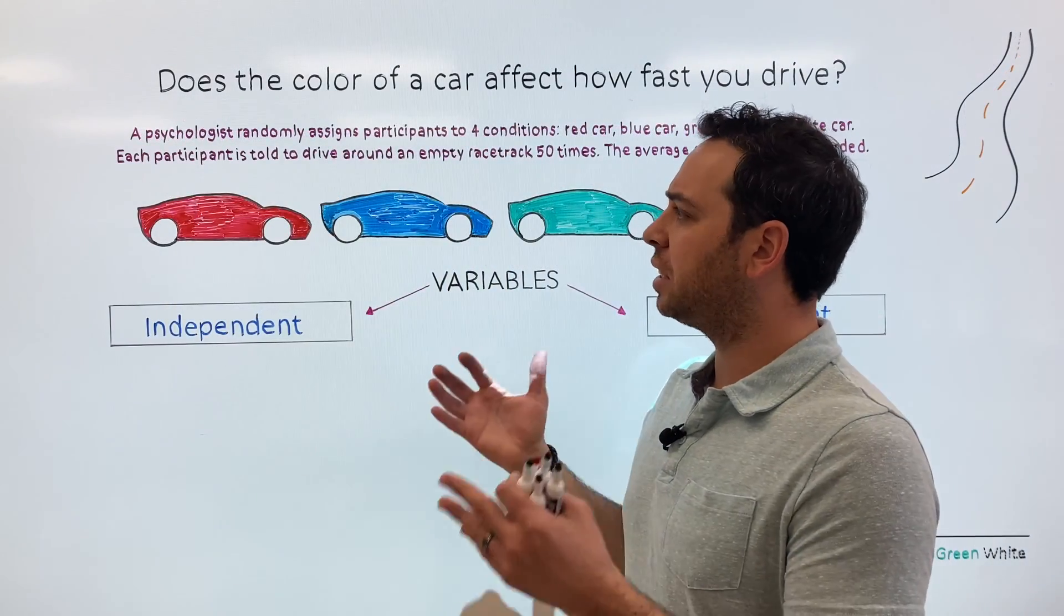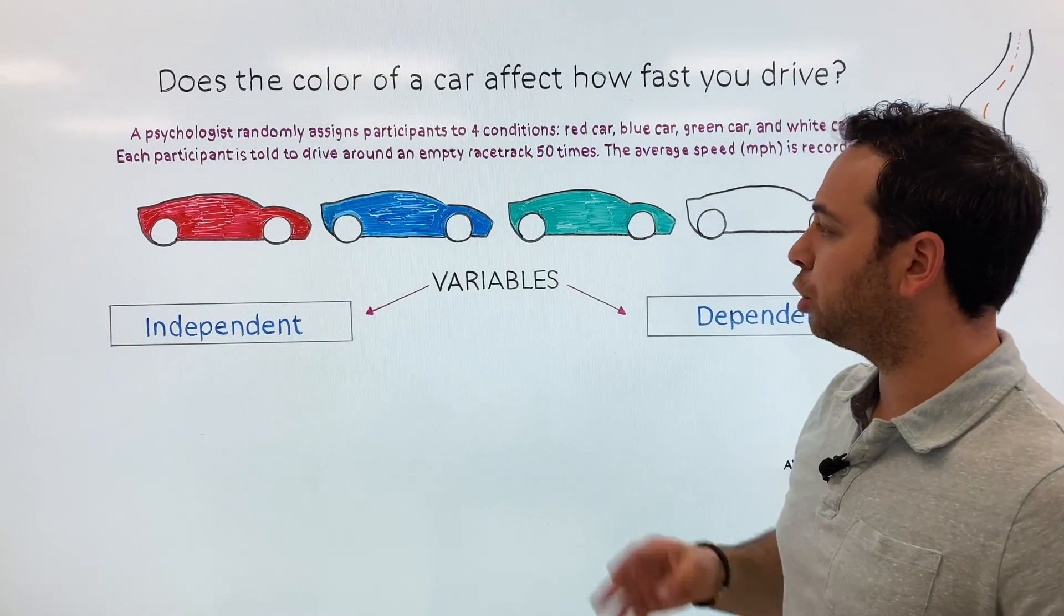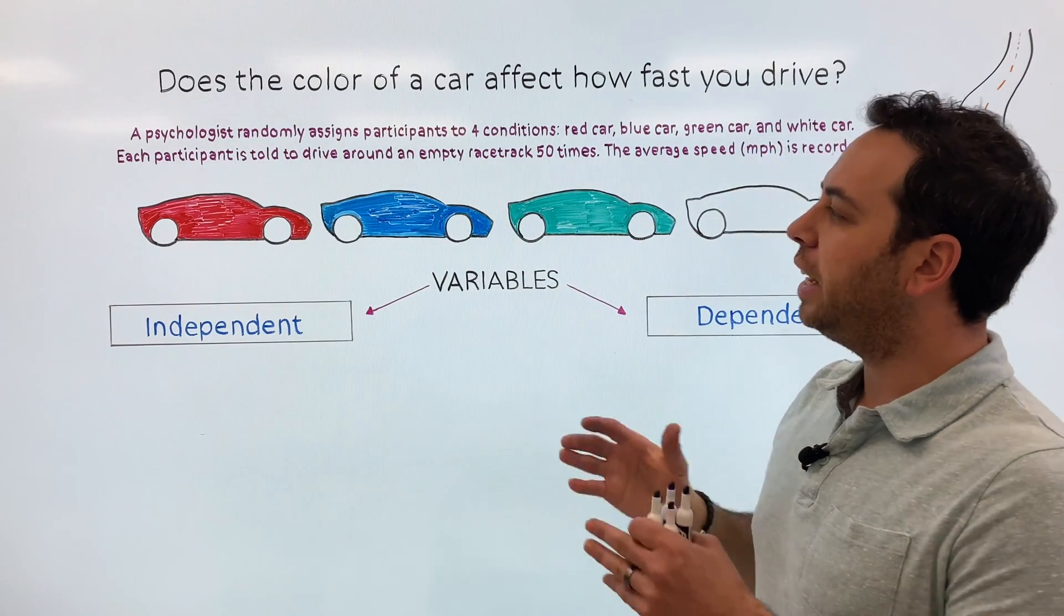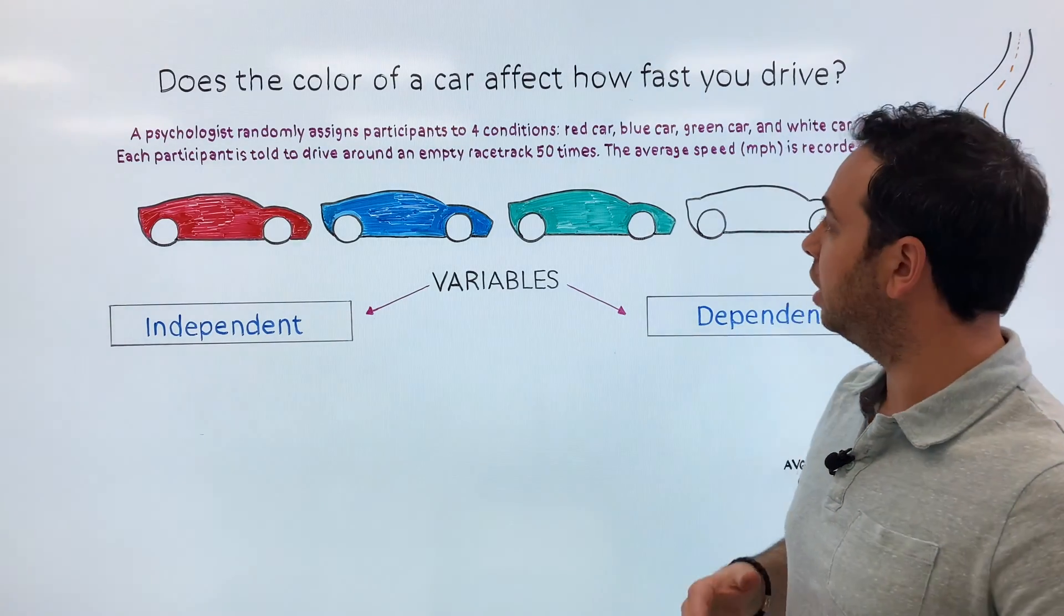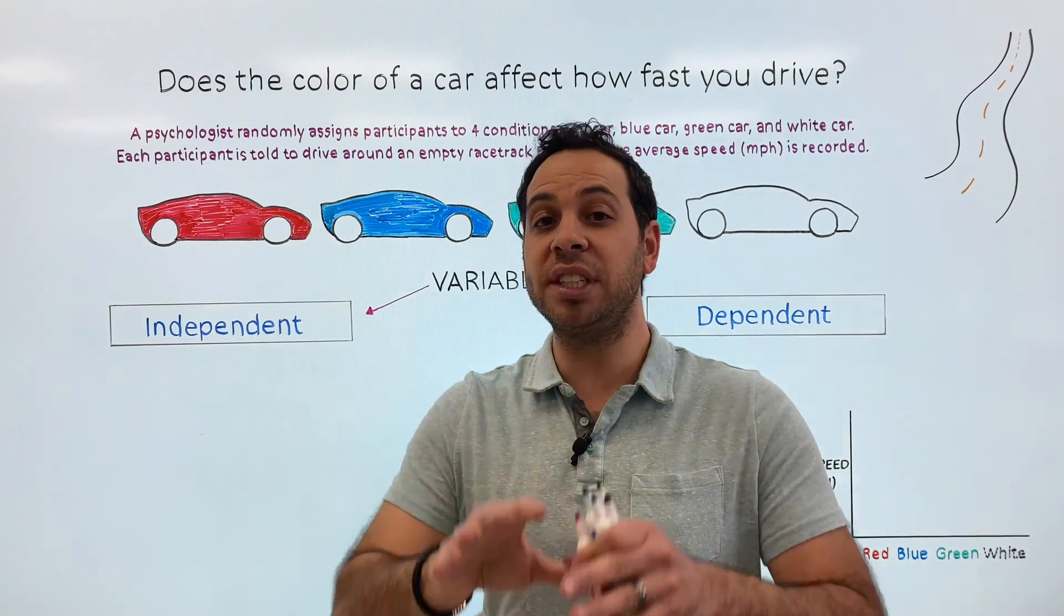Alright, so let's first understand the design of the study. A psychologist randomly assigns participants to four conditions: a red car, a blue car, a green car, and a white car. And each participant is told to drive around an empty racetrack 50 times and the average speed in miles per hour is recorded. So there's the design of our study.